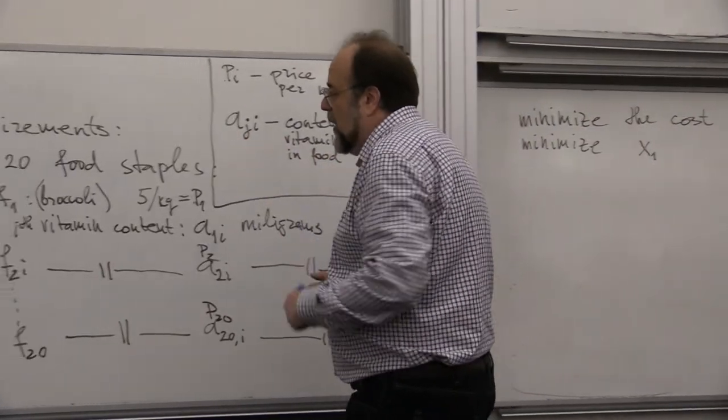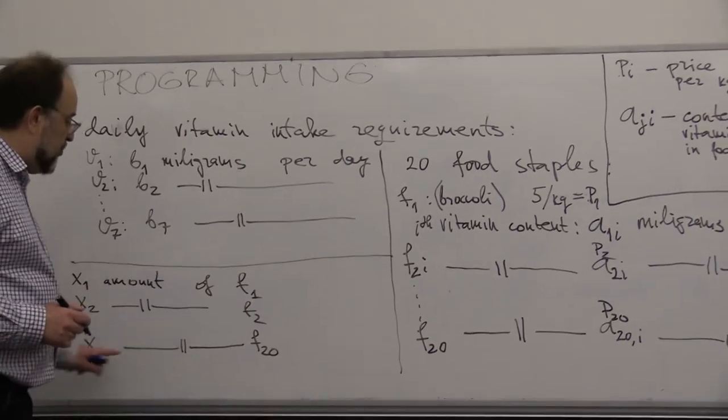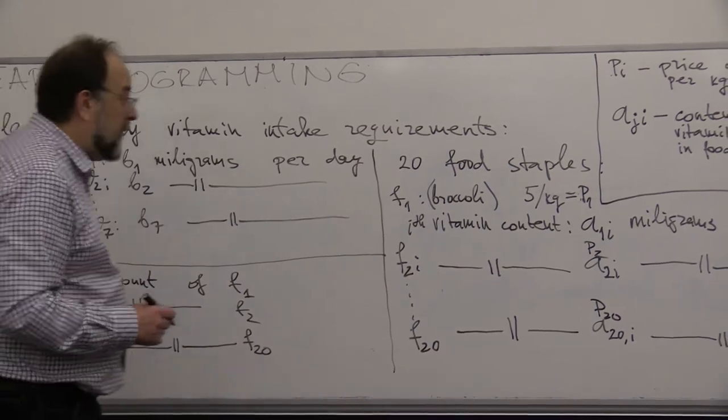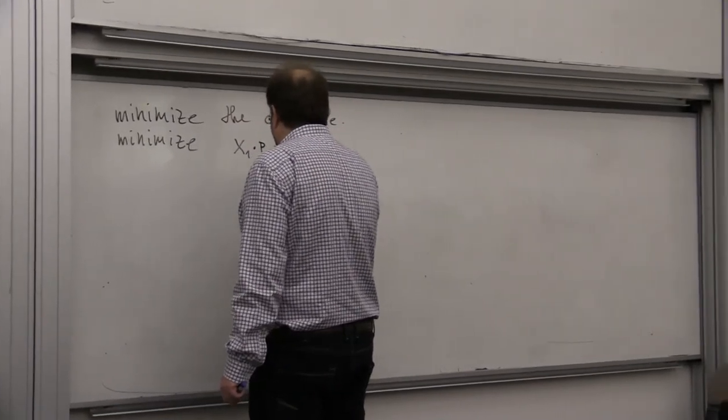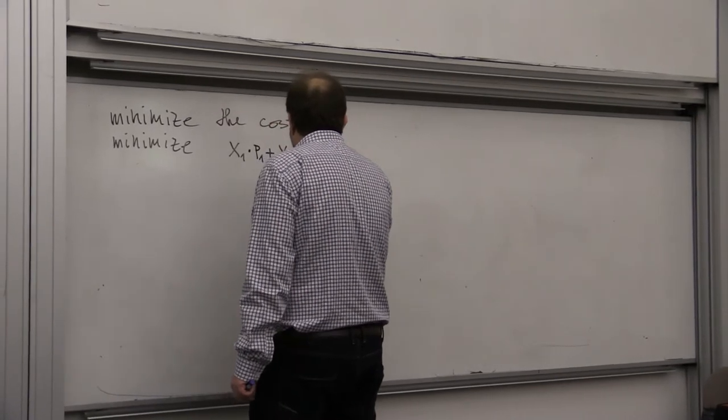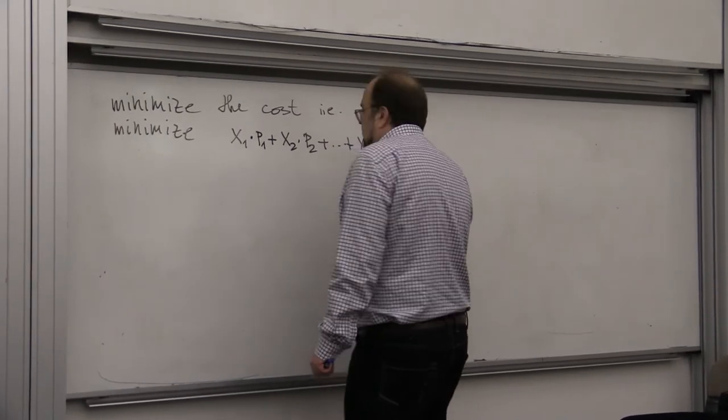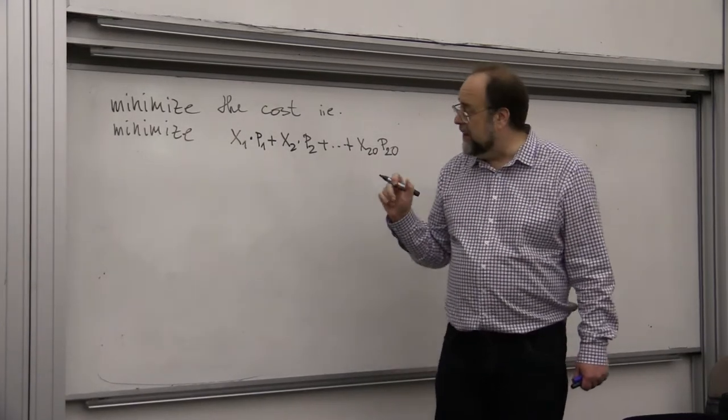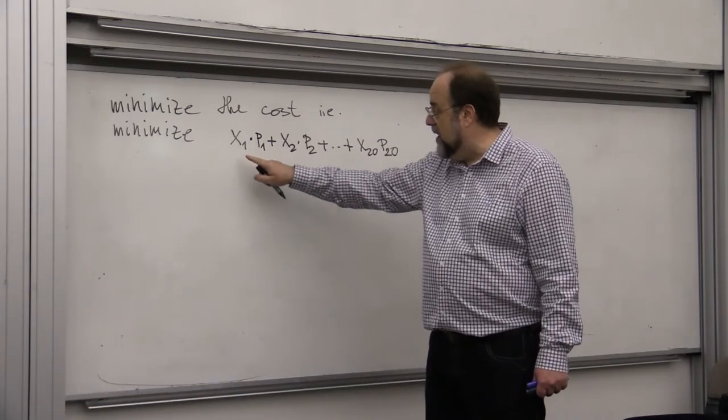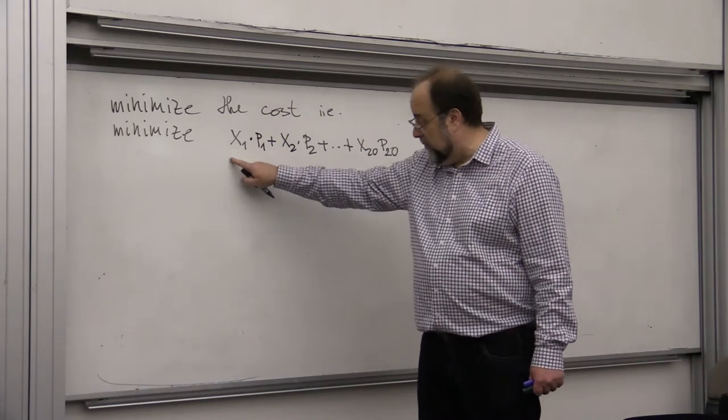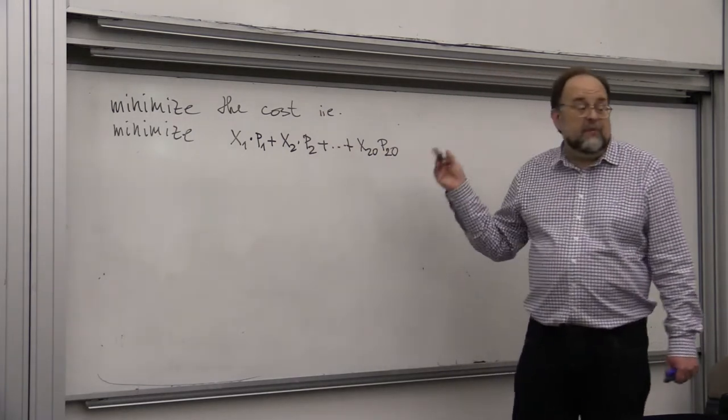So now she wants to minimize the total cost. What will be the total cost? Well, if these are the unknown amounts of how much of each food sample she has to buy, then this will be minimizing X1 times P1 plus X2 times P2 plus X20 times P20. So that's the objective, because if P1 is price per kilo of food number one and this is the amount that she is going to buy, this will be total cost for this food sample. And she wants to minimize this cost.